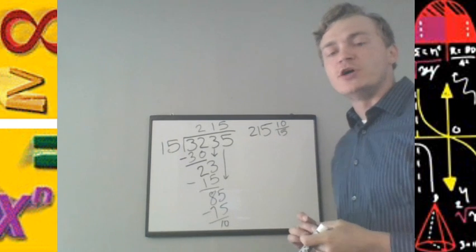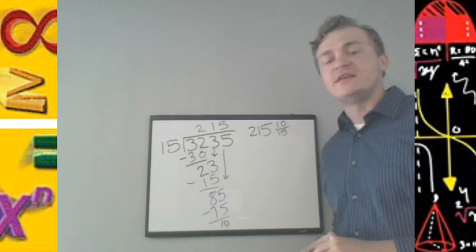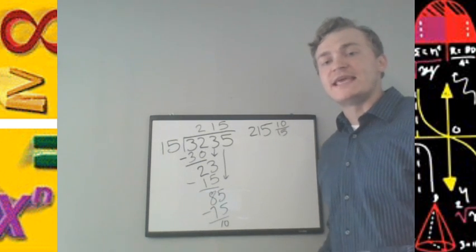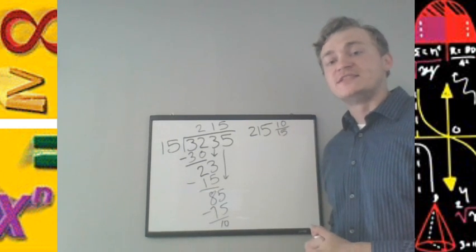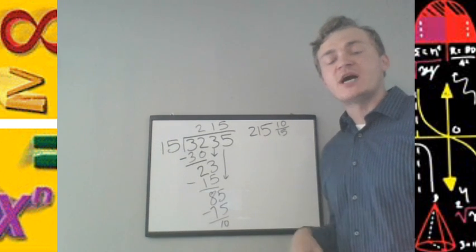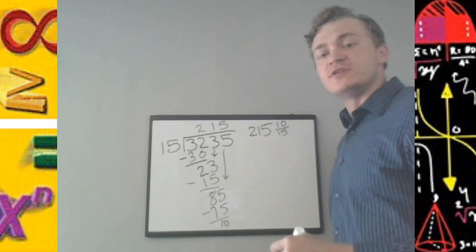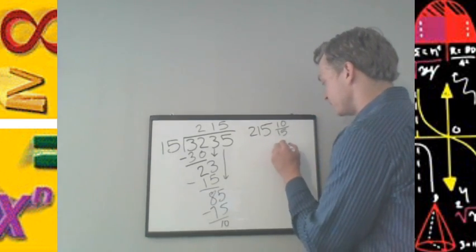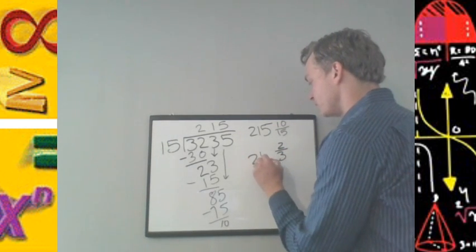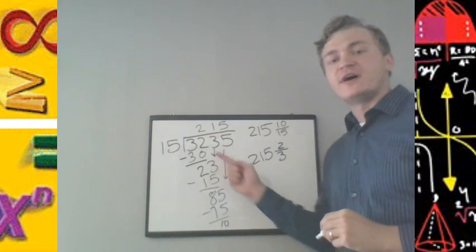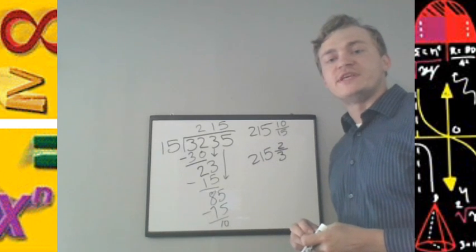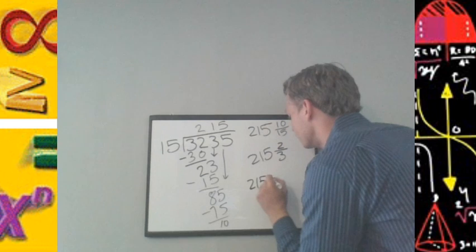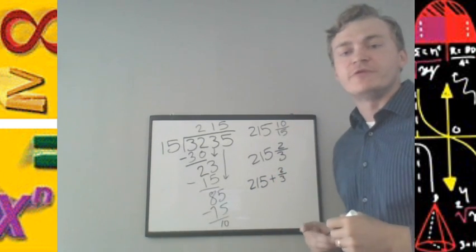As you see, the fraction 10 over 15 can simplify because both 10 and 15 have a factor of 5. You know that they are divisible by 5 because any integer that ends in a 0 or 5 is divisible by 5. 10 is 2 times 5. 15 is 3 times 5. So the factors of 5 cancel, leaving you with the simplified fraction, the reduced fraction, of 2/3. So 3,235 divided by 15 is 215 and 2/3. We could also express this as 215 plus 2/3.